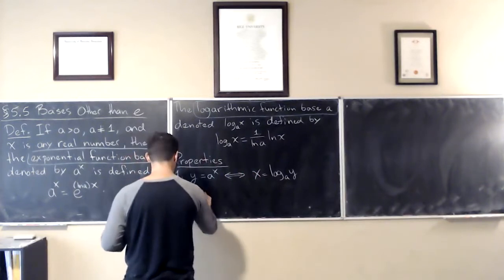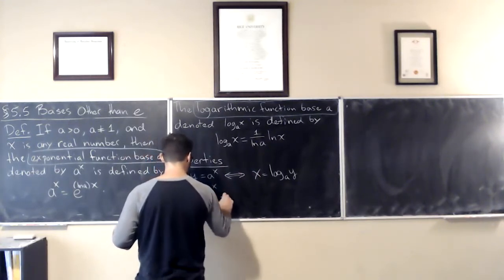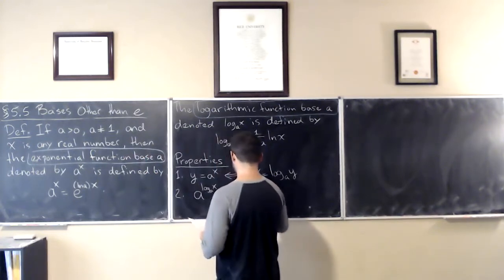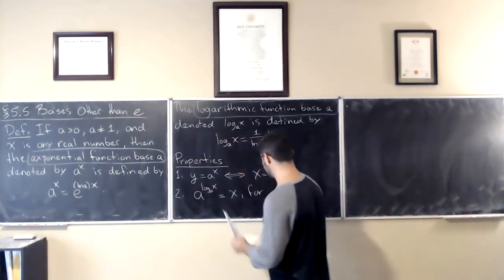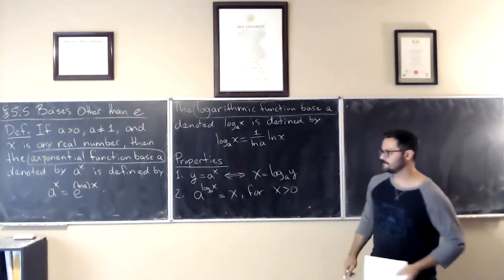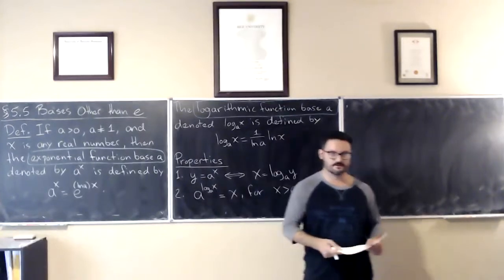There are two: a to the power of log base a of x is equal to x, and that's for all x greater than zero. Hopefully you can see why that would be the case. Why you get back x, because these are inverses of each other, right?